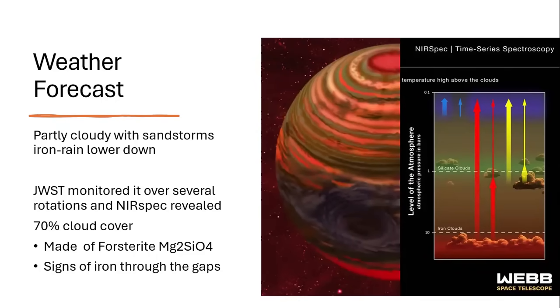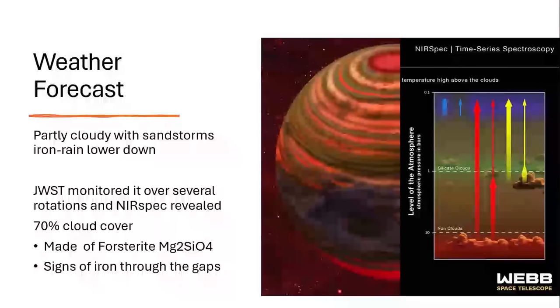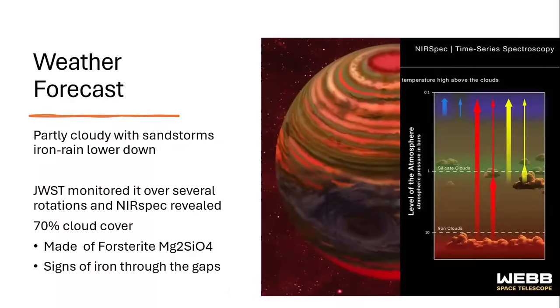James Webb monitored the spectrum over several rotations using the Nearspec and revealed around about 60 to 70 percent cloud cover, where those clouds were not made of water vapour like they are on the Earth, but they were made of fosterite, which is magnesium silicate. So essentially a sand like rock, only this time it's not just ordinary silicon dioxide, it's magnesium silicate fosterite clouds